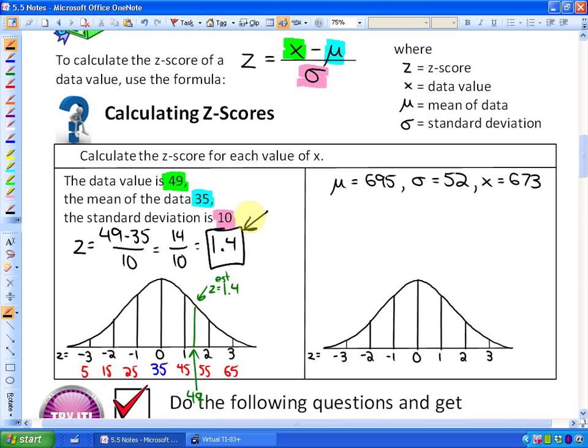So I accurately estimated the z-score, but the z-score is exactly 1.4. So that data value 49 is 1.4 standard deviations above the mean for that particular set of data.